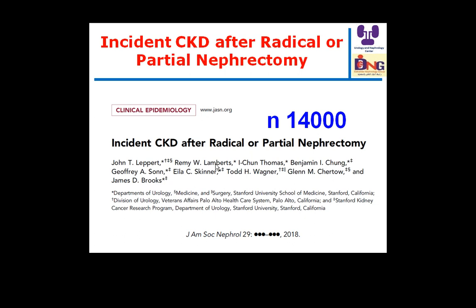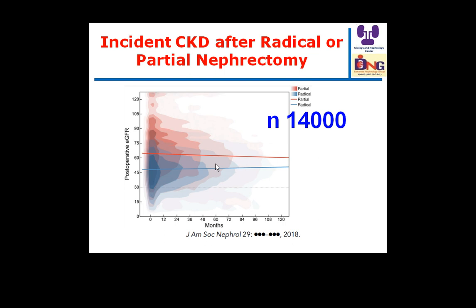Regarding partial versus radical nephrectomy and development of chronic kidney disease: this study including 14,000 patients concludes that if we can manage renal tumor by partial nephrectomy, it is preferable, because radical nephrectomy is associated with reduction of renal mass and significant decline in GFR. Moreover, survival is drastically affected by the radicality of management, so partial nephrectomy, if feasible, is preferred — as shown in the post-operative estimated GFR comparison where radical nephrectomy causes greater GFR reduction.